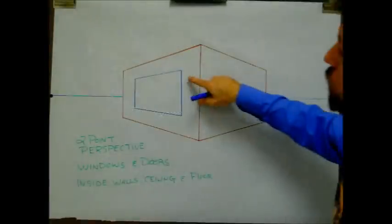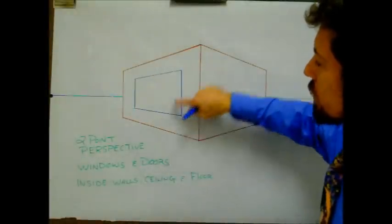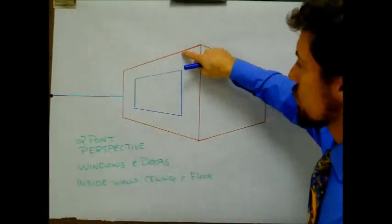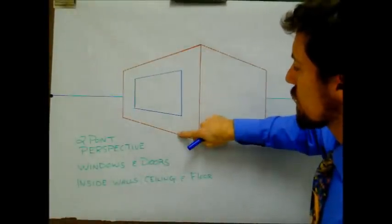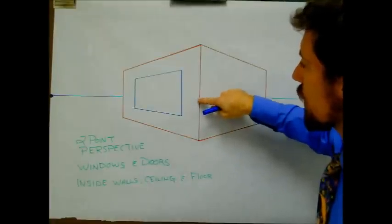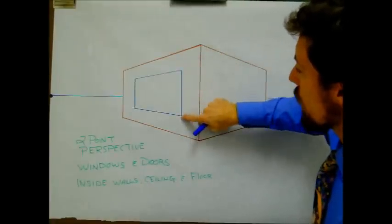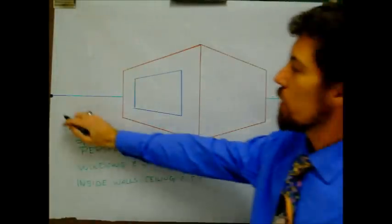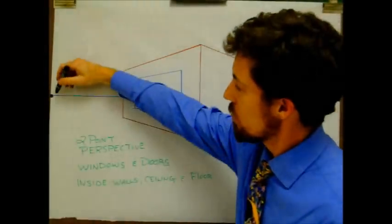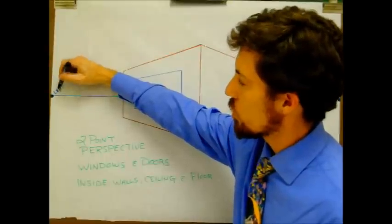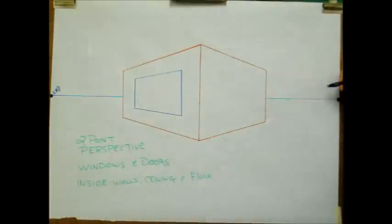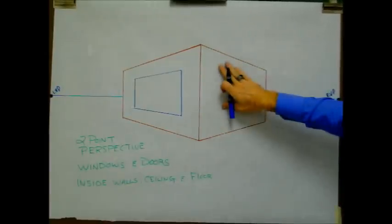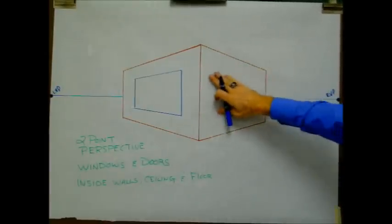So what we've done is drawn one window on this side. We start with a vertical line — it does not touch the top, bottom, or the side. We've gone from the vertical line to the left vanishing point. Now we're going to draw a door on the right side, so I'll label this the right vanishing point.